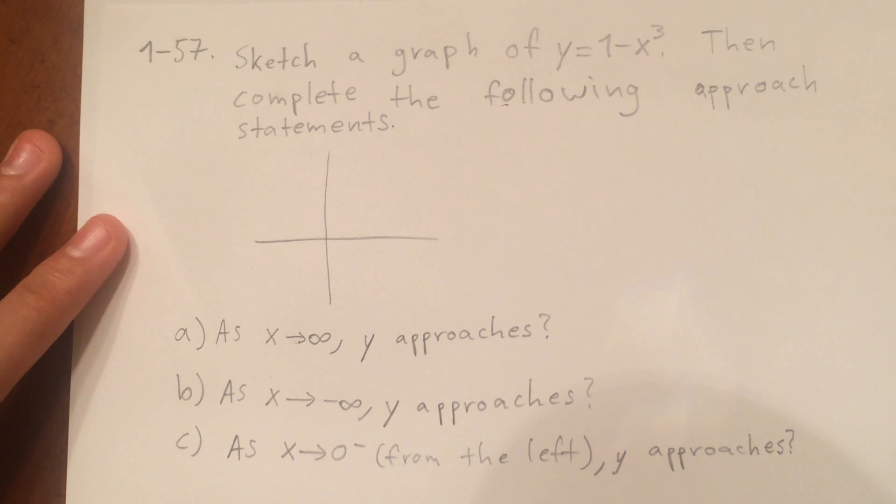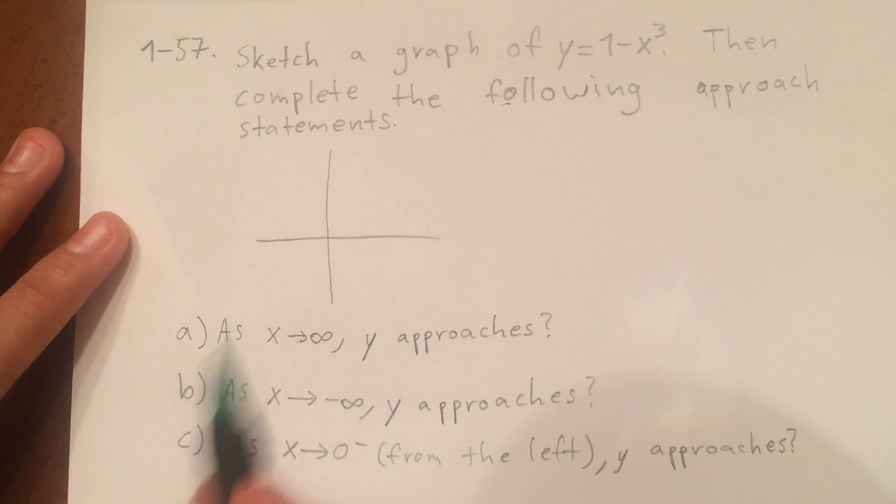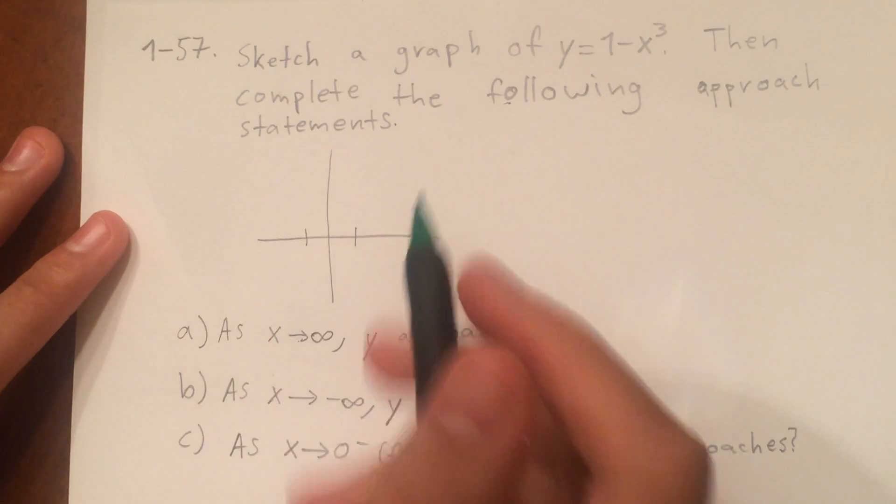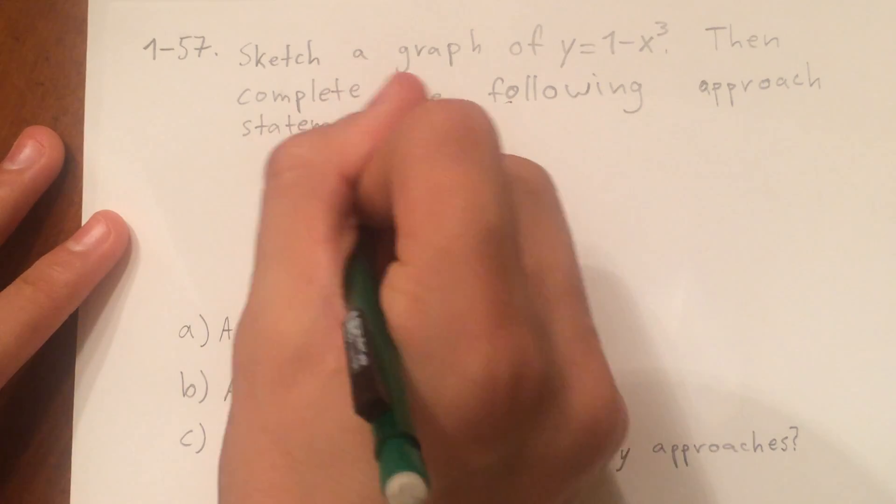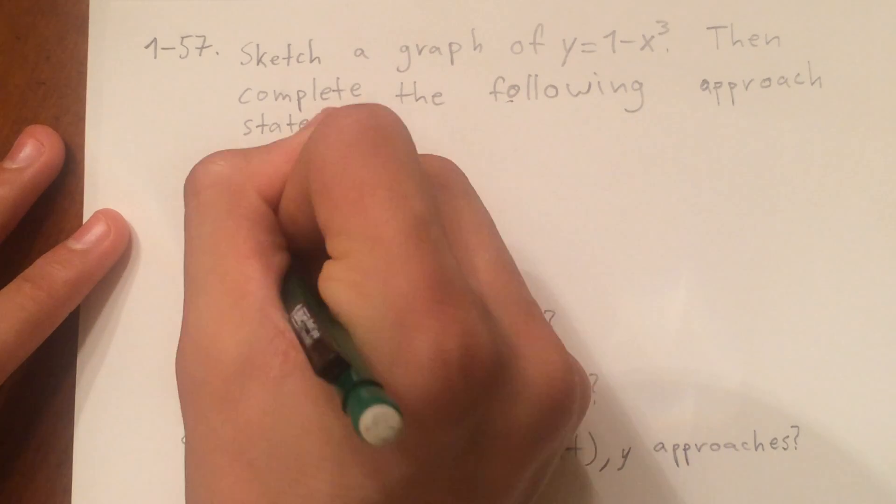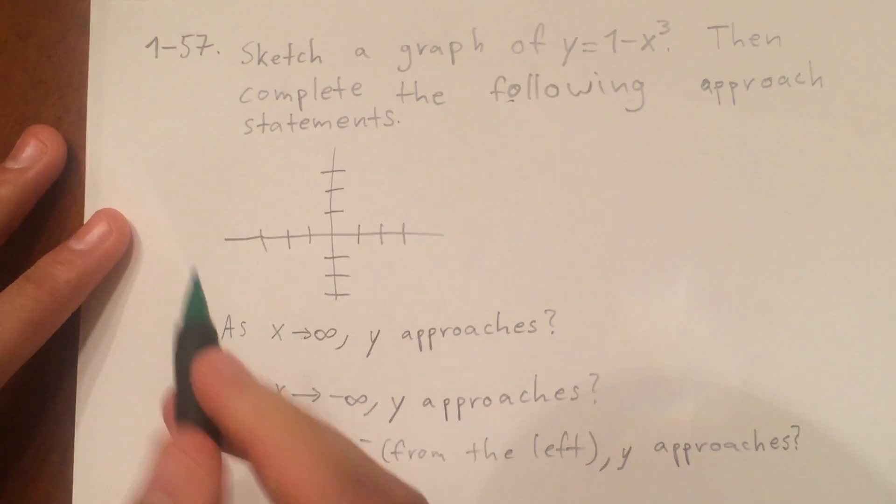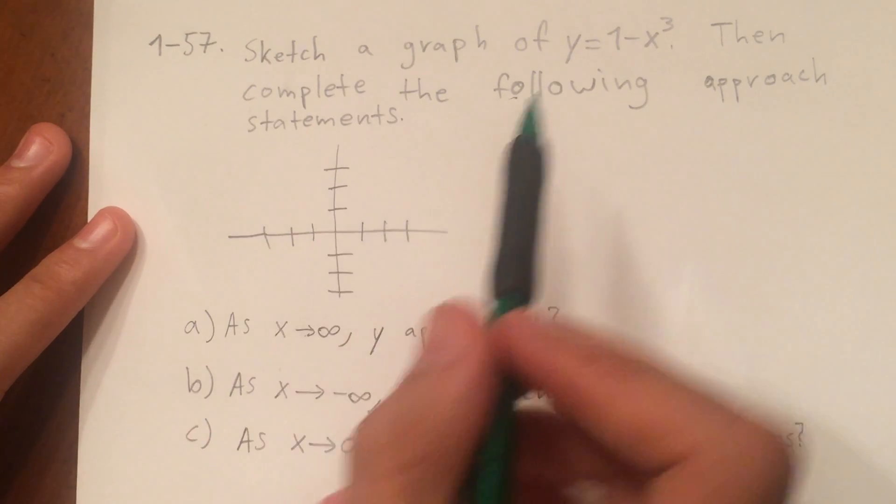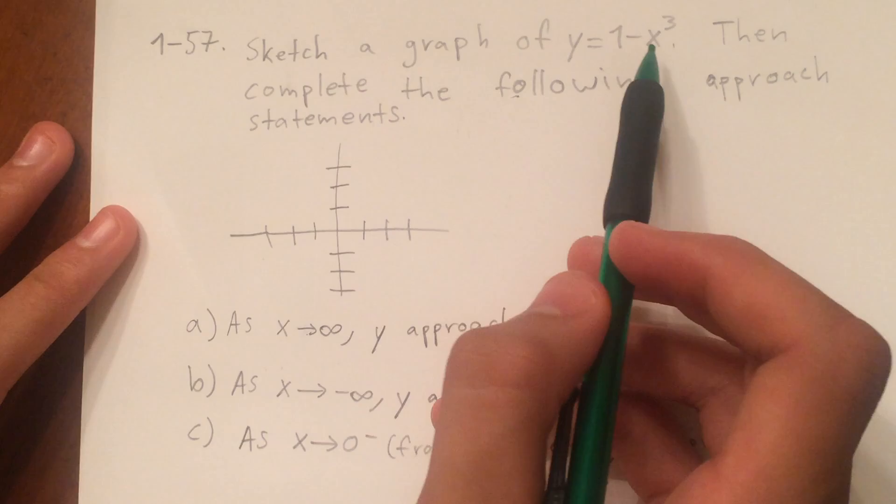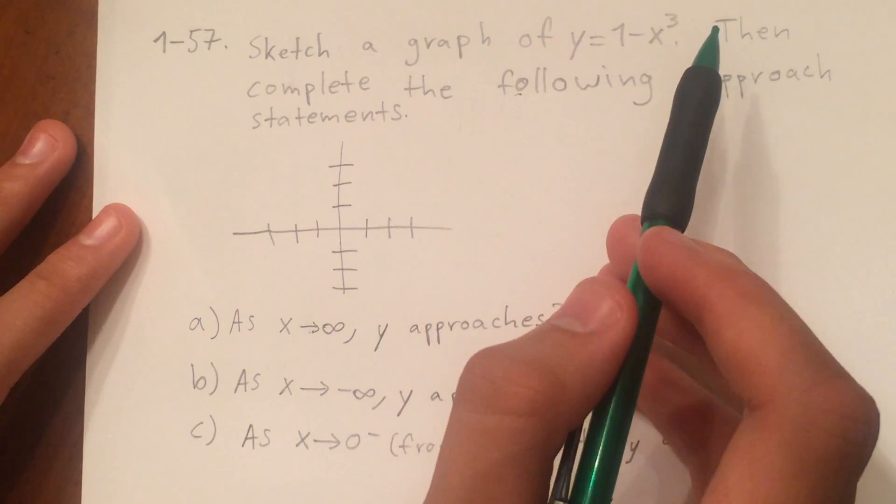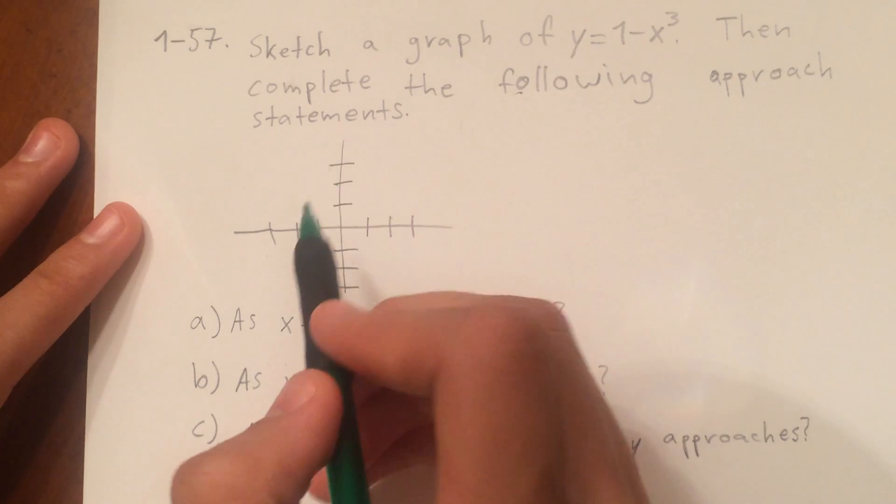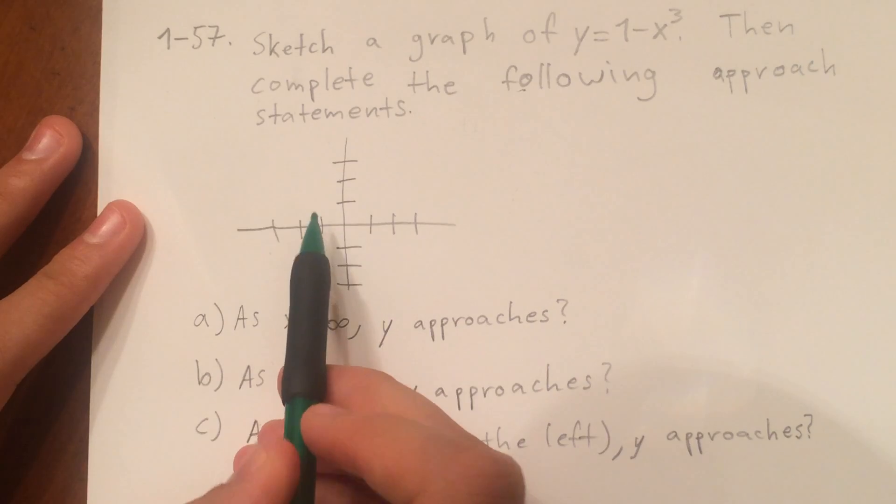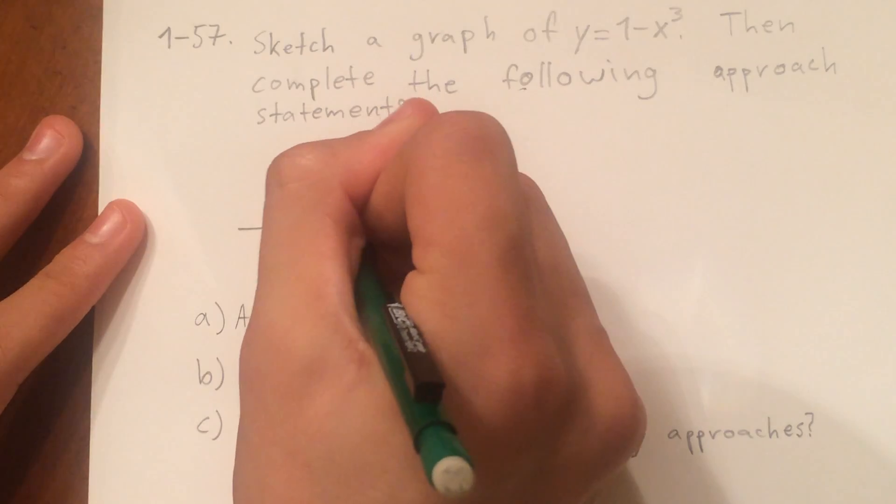So let's just start by plugging in maybe the points negative 1, 0, and 1 as our x values, and see what we get for y. When we plug in negative 1 for our x value, we get 1 minus negative 1 cubed, which will end up being 1 plus 1. So at x equals negative 1 right here, y equals 2, which is right here.